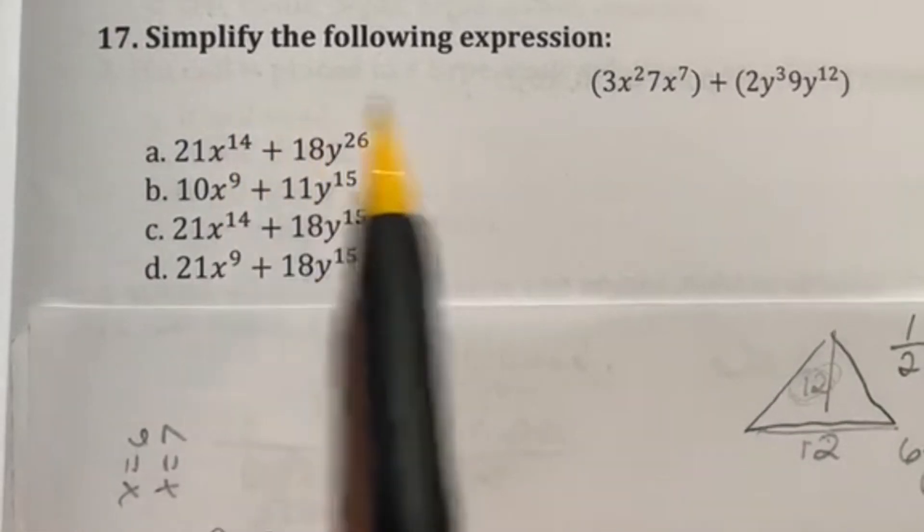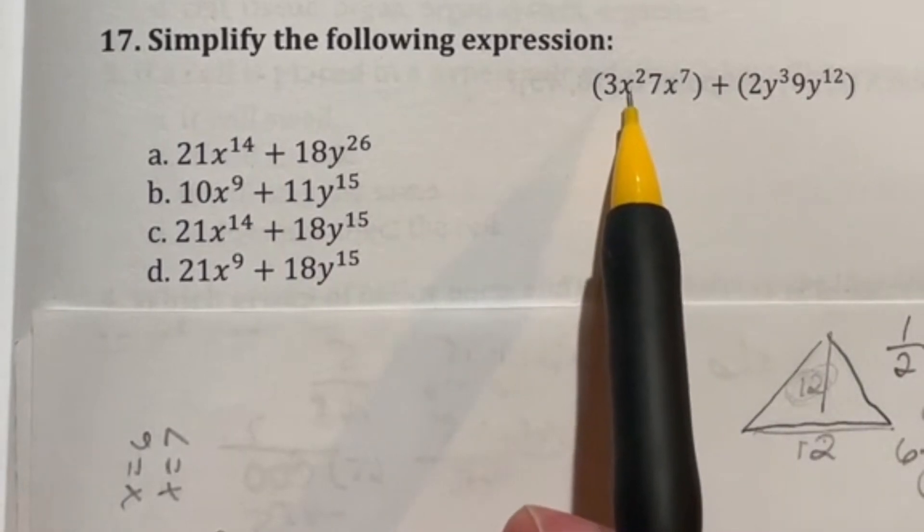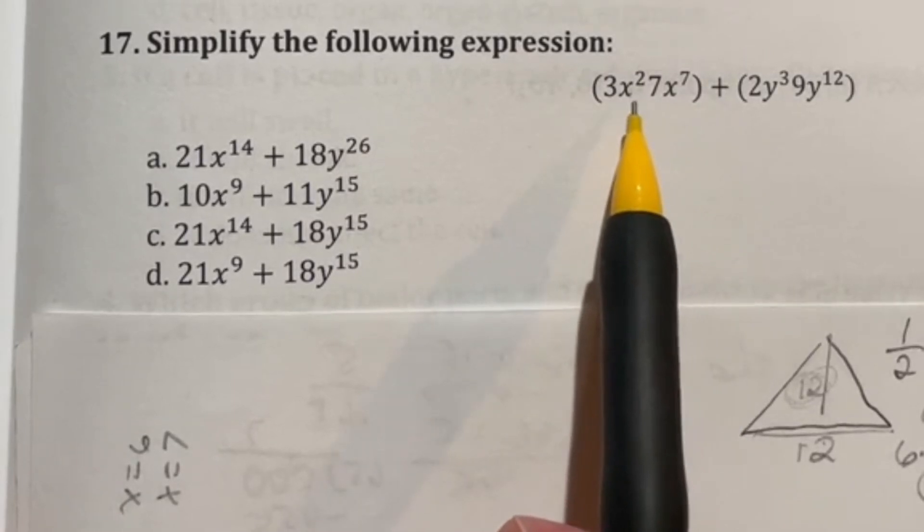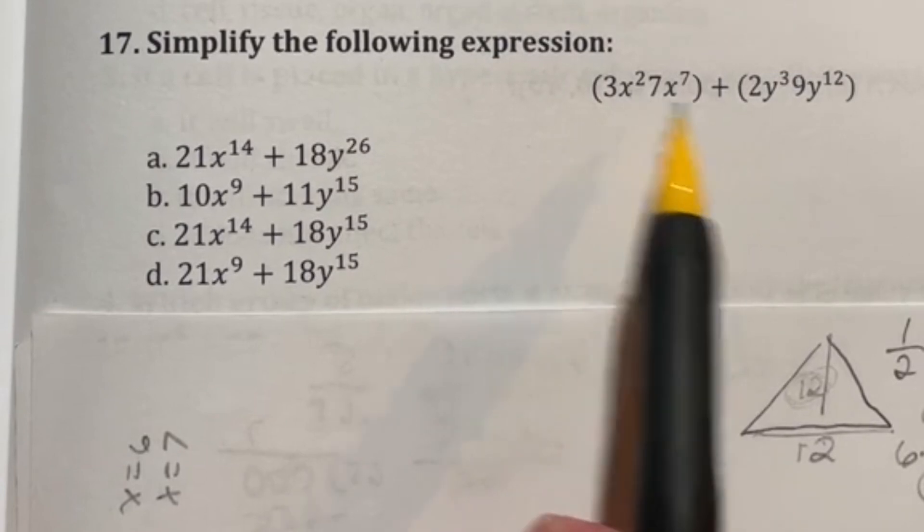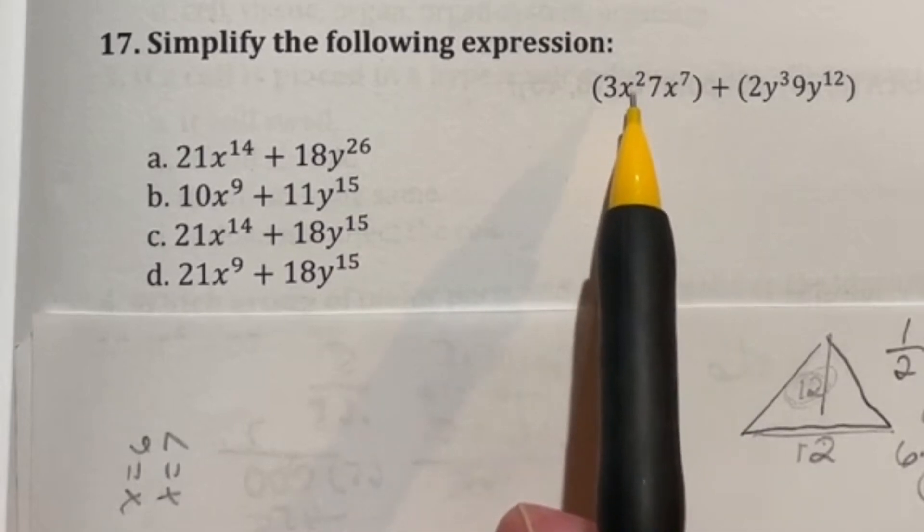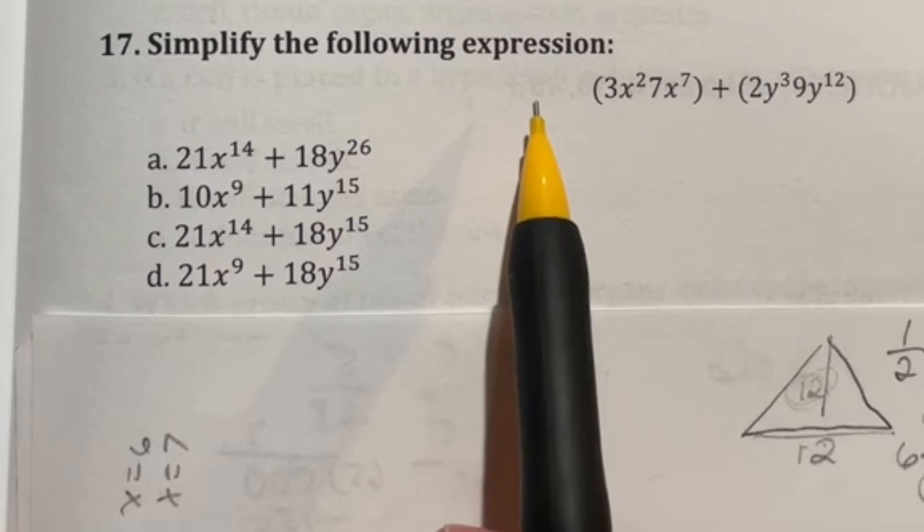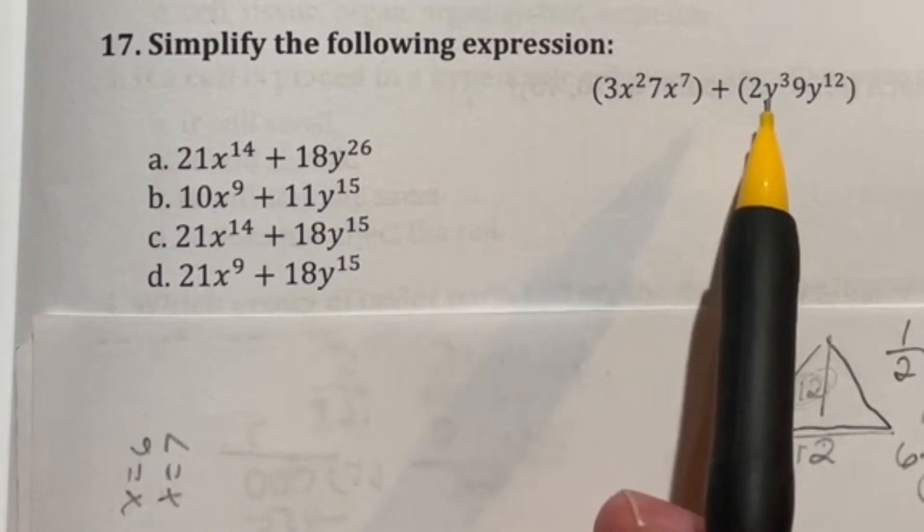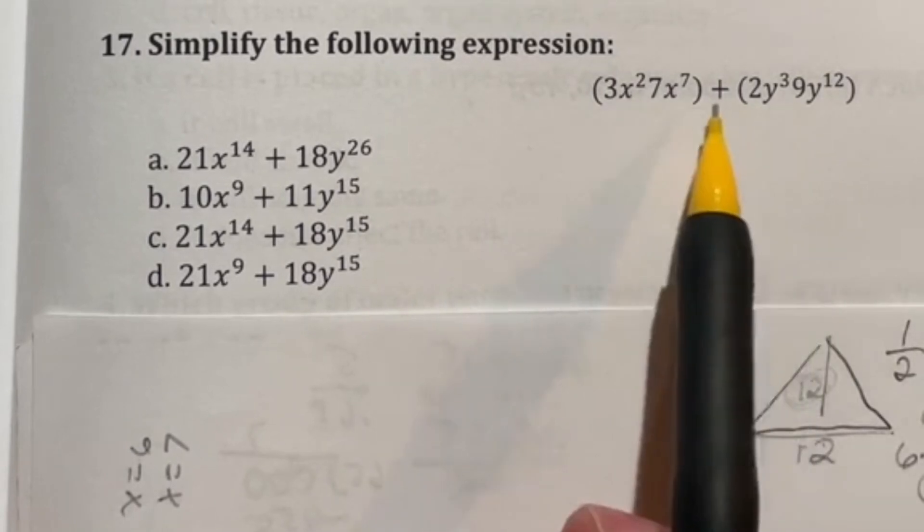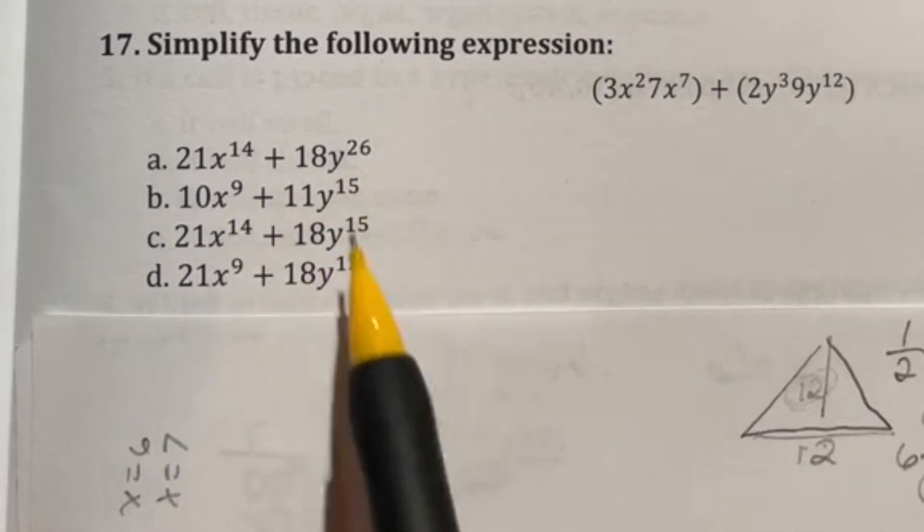Number 17 says to simplify the following expression. When you're dealing with numbers and exponents, if you're multiplying and dividing them, as long as they have the same base, you can combine them together. If you're adding and subtracting them, then they have to be exactly the same type. For example, an x squared can only be added to another x squared term. In this case, we're going to probably have two different terms here, because this one has x's and this one has y's. So there's no way to actually combine them. That can be confirmed when we're looking at our options, you can see every single one has two.